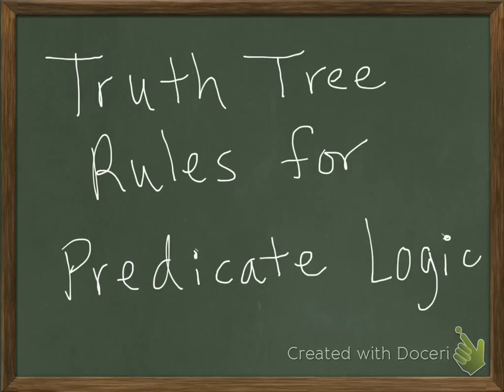In this video, I will explain all of the truth tree rules for two-sided truth trees in predicate logic. There are just four rules for quantified formulas that we will need. These rules should be easy to memorize, since they basically mirror what we do with quantified formulas in predicate logic proofs.